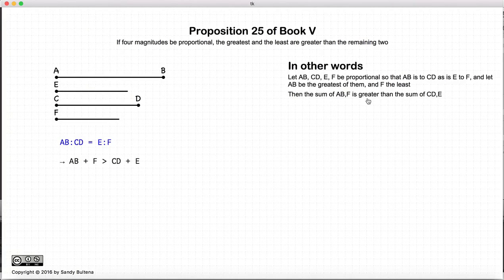In this proposition we have four line segments AB, E, CD, and F, and AB is the largest of the line segments, and F is the smallest of the line segments.